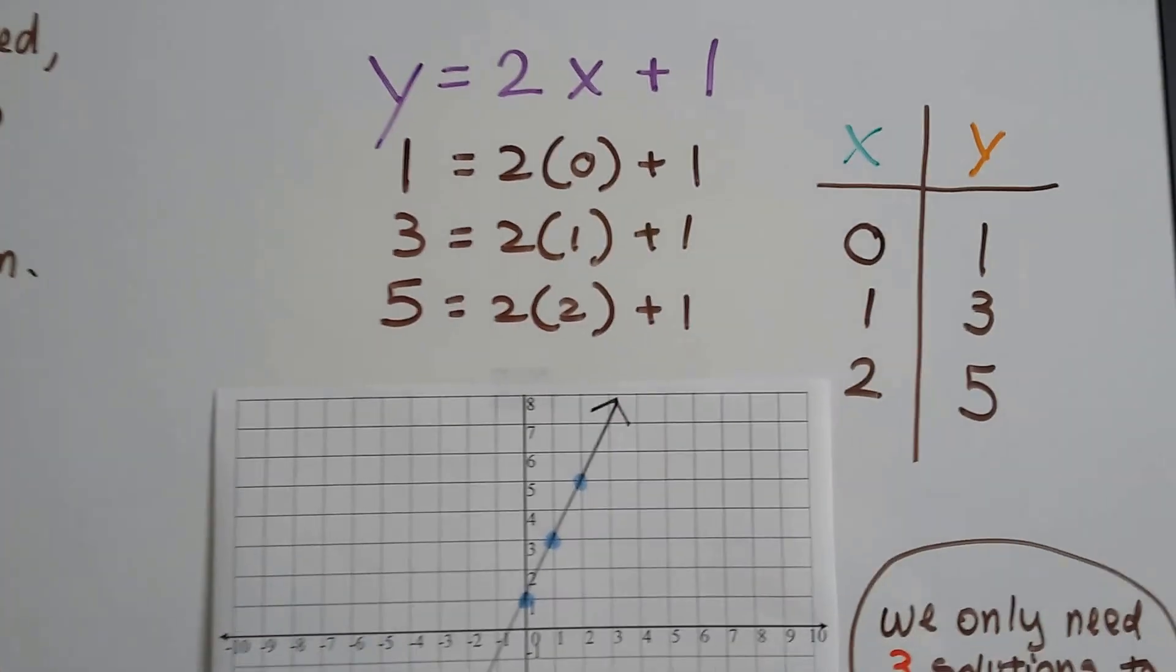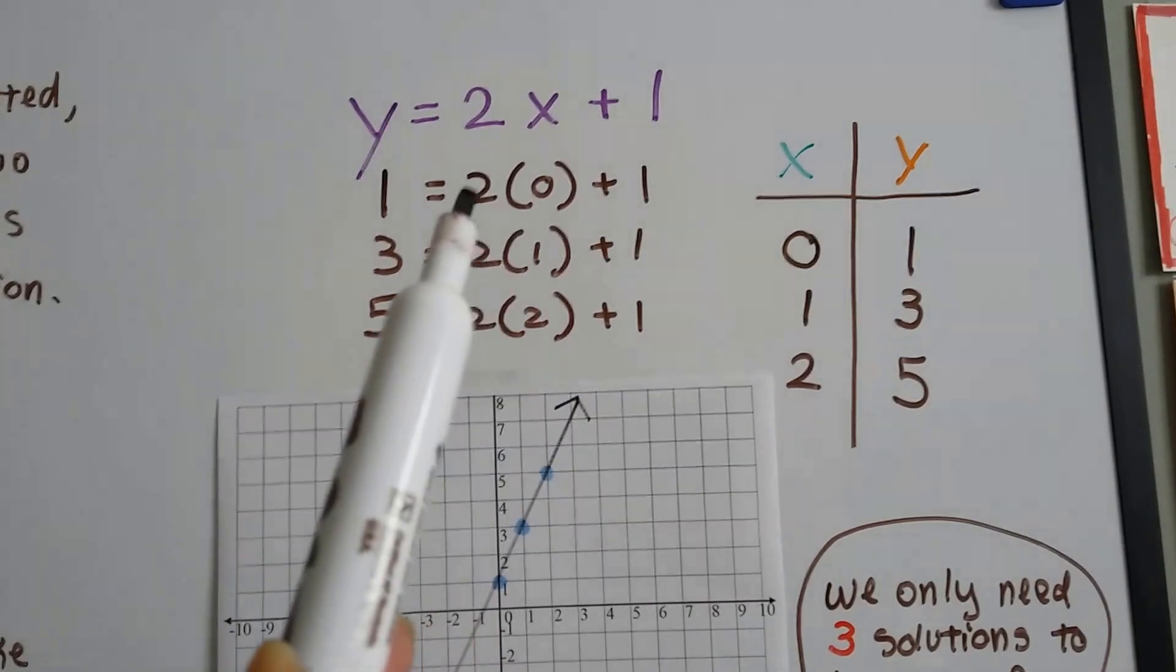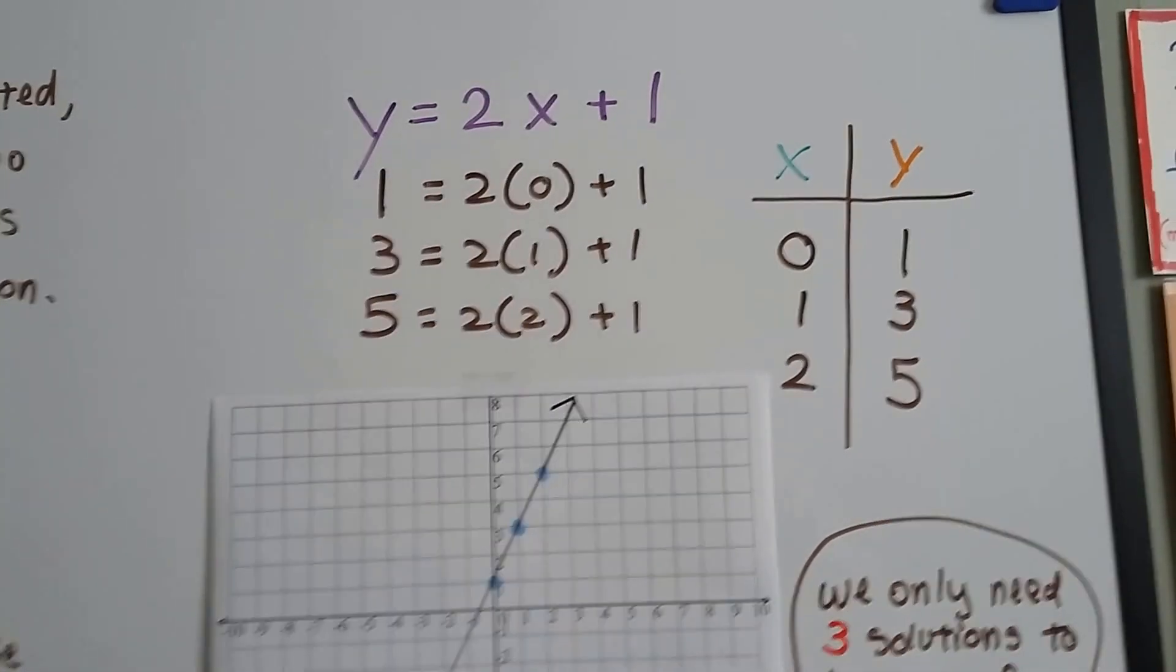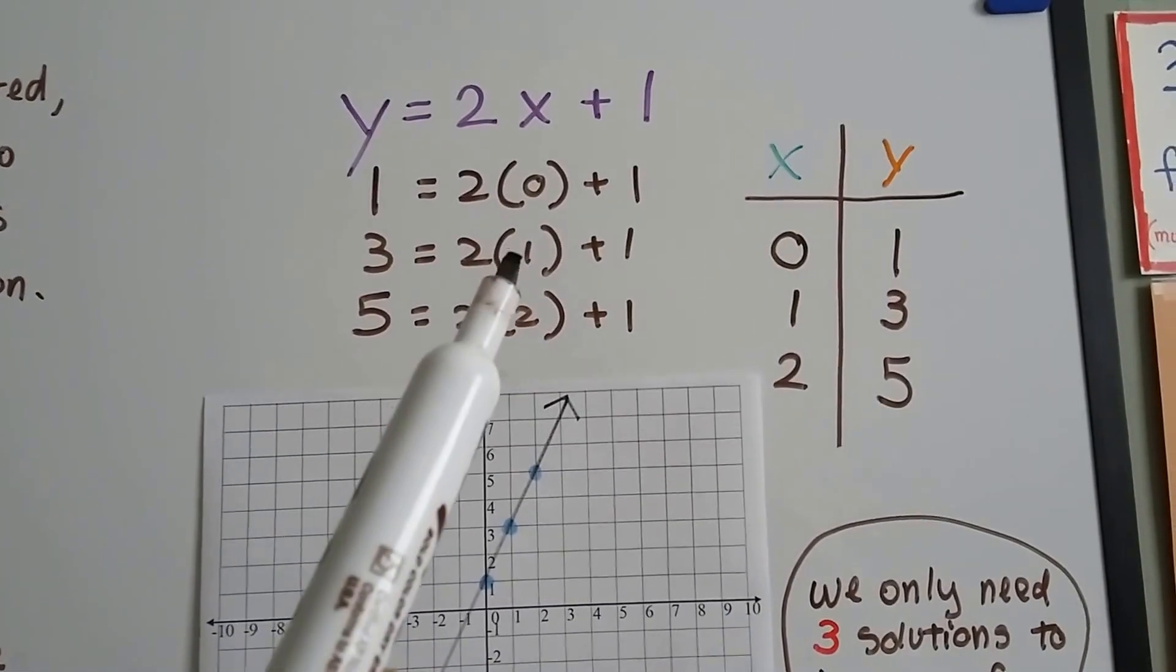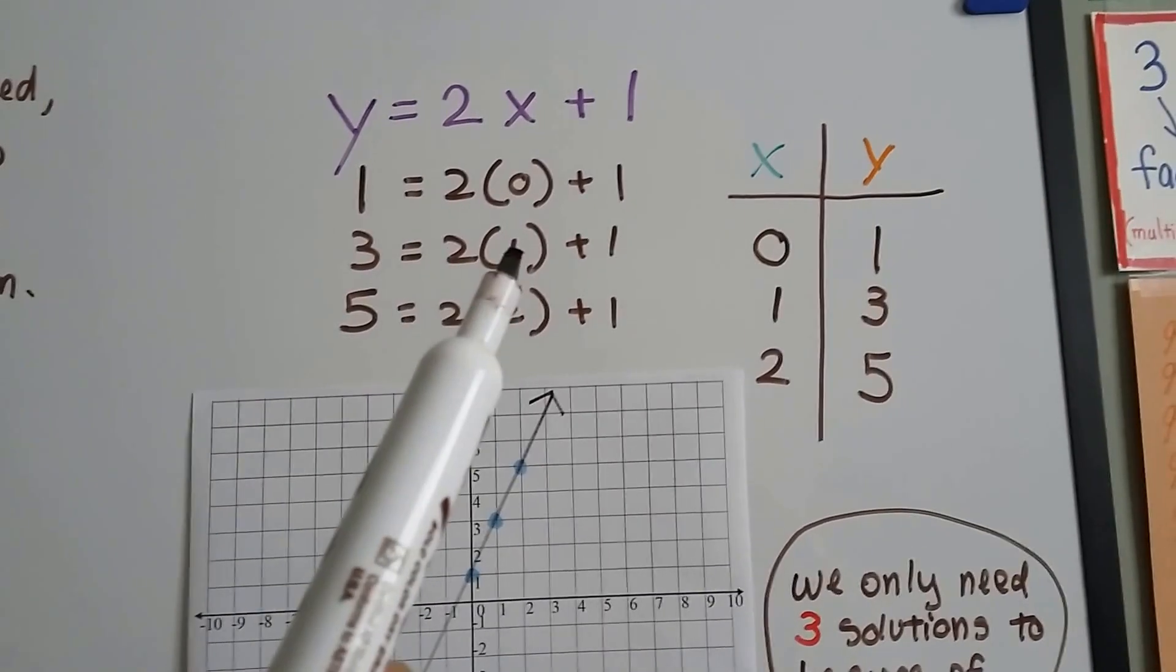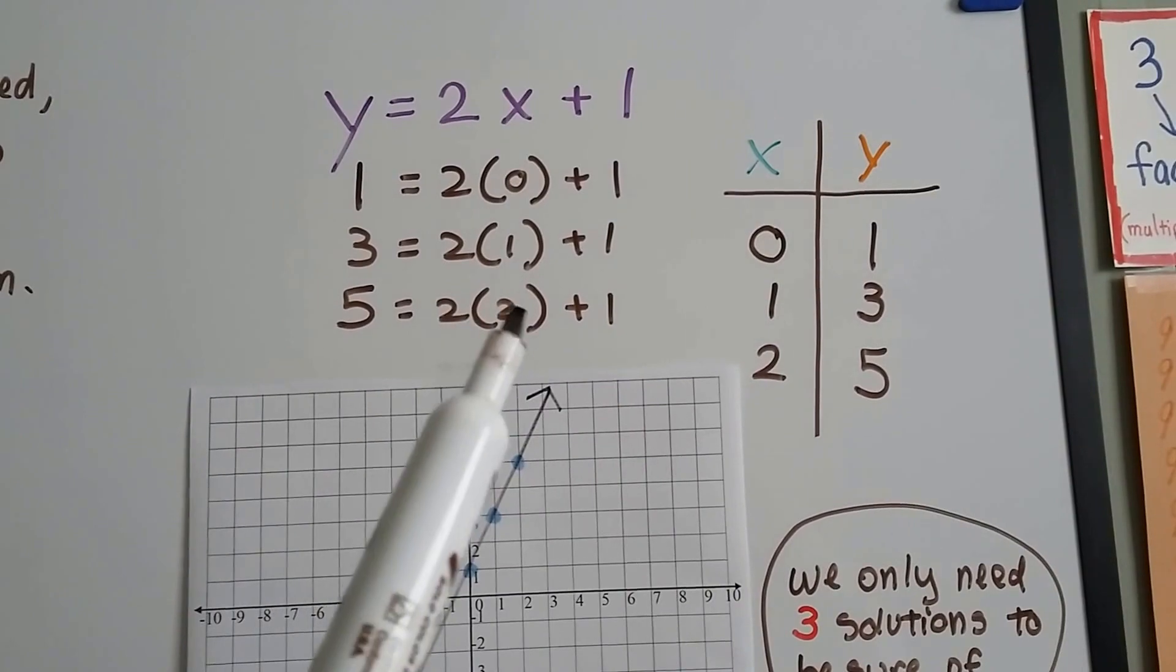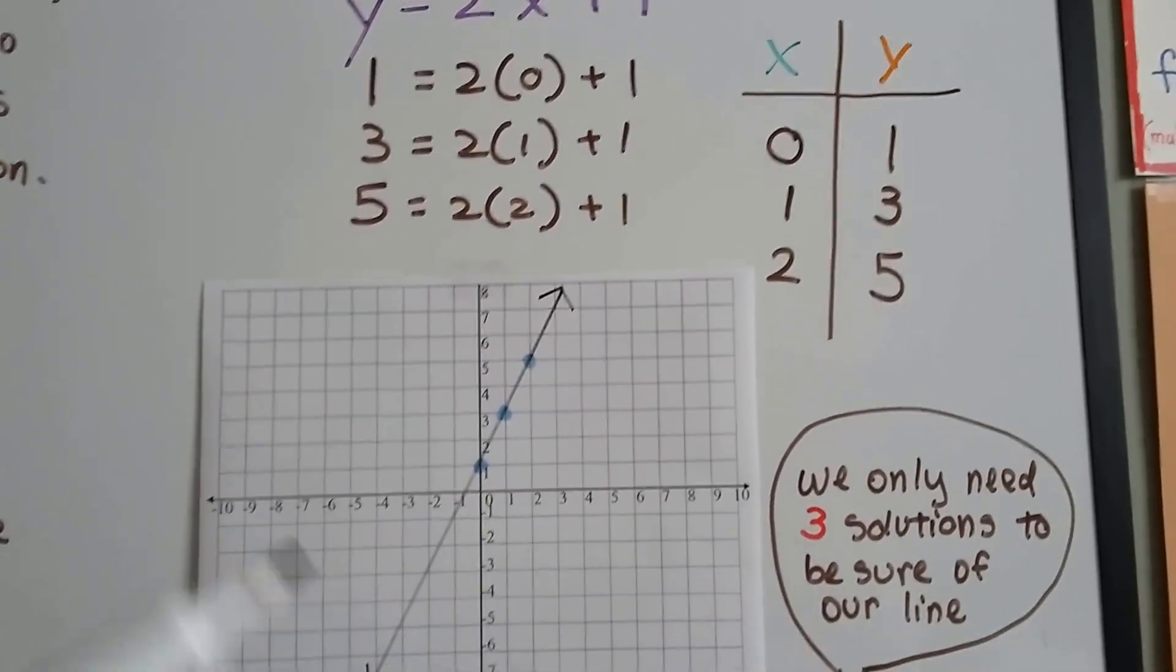Let's take a look at y equals 2x plus 1. If x is 0, then 2 times 0 is 0, and 0 plus 1, that would make the y value a 1. So we have a 0 and a 1. If x is a 1, then 2 times 1 is 2 plus 1, then y is a 3. And if x is a 2, then we got 2 times 4 plus 1 that makes y's value a 5. So now we got three ordered pairs.